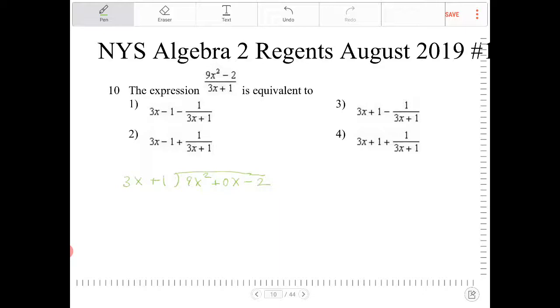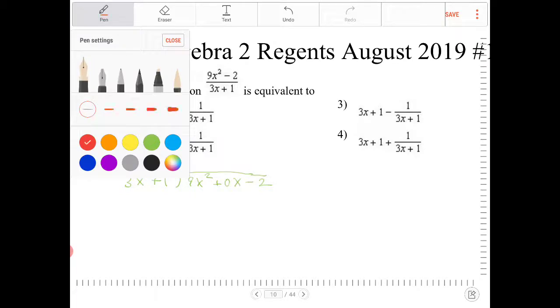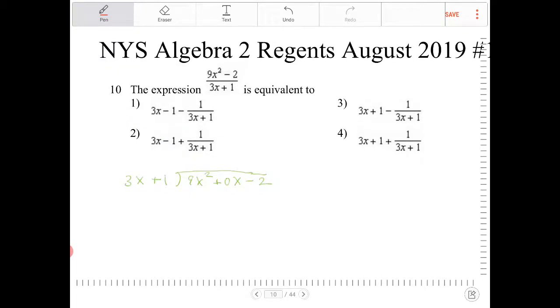Alright, so from here, what I'm going to do is try to eliminate term by term. I'm going to try to eliminate the 9x squared. I'm going to use a different color. So what do I multiply 3x plus 1 by so that I can eliminate 9x squared? I want to multiply it by 3x.